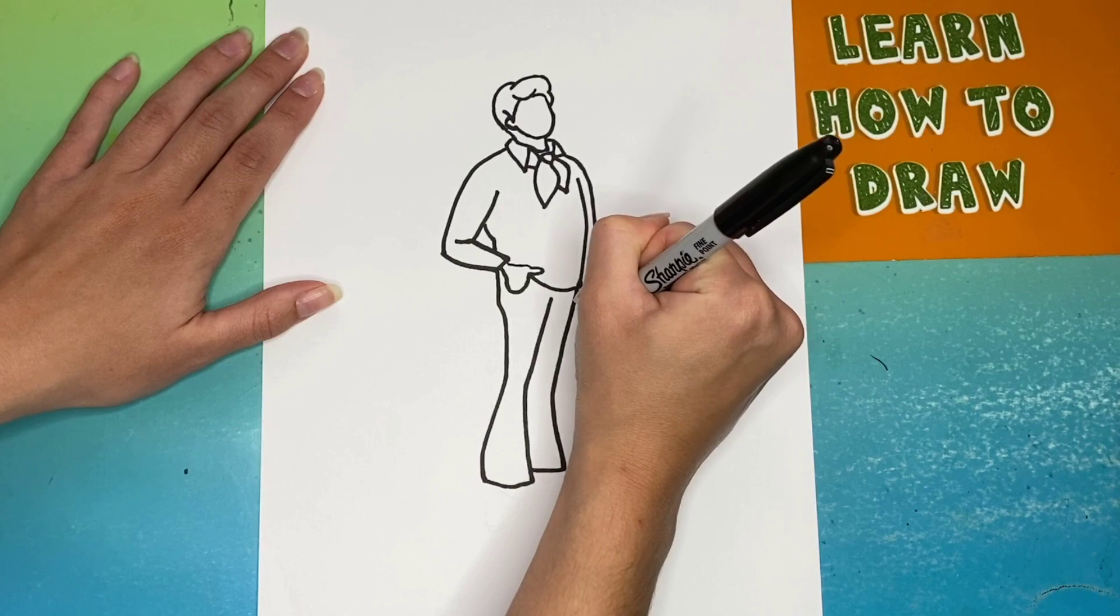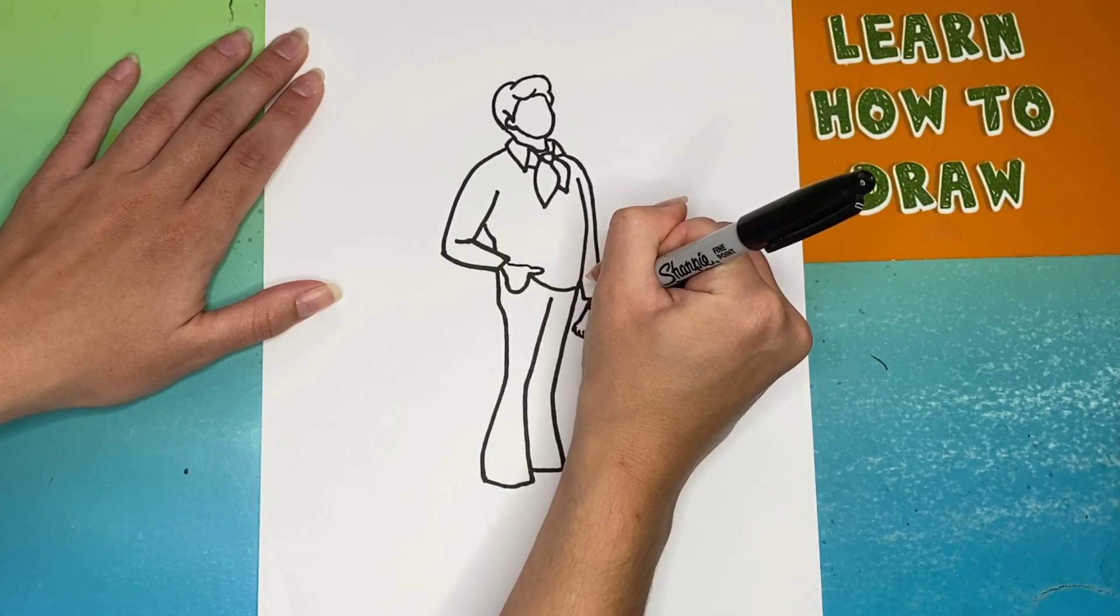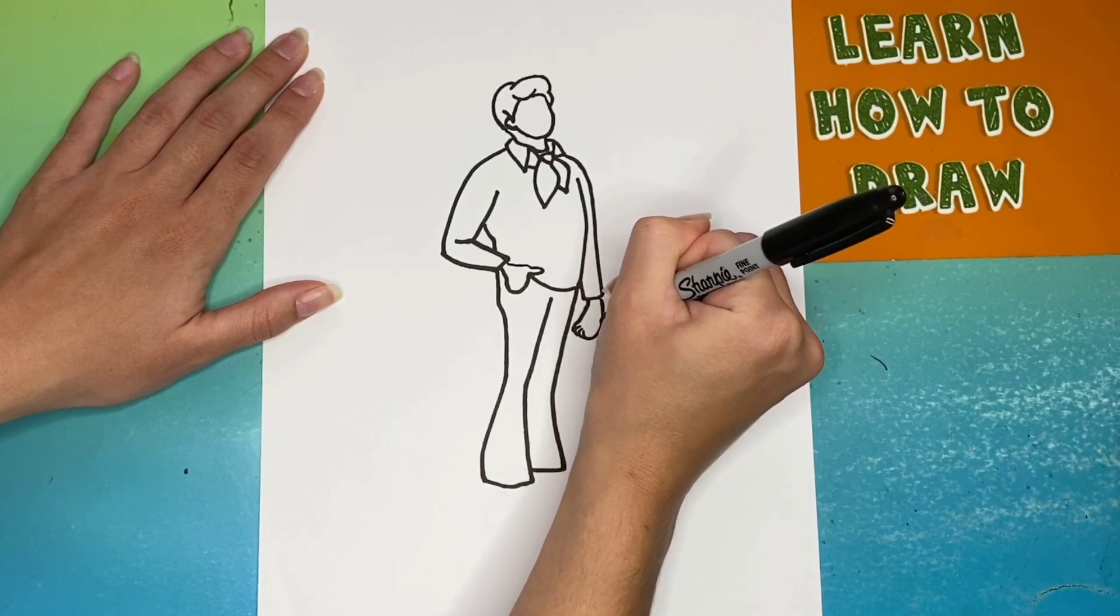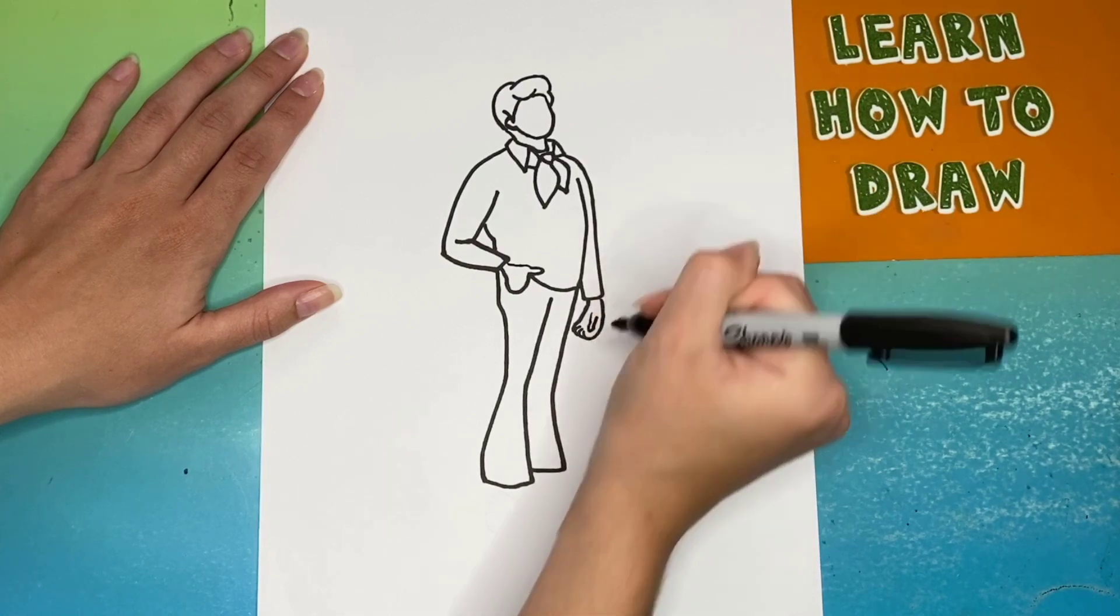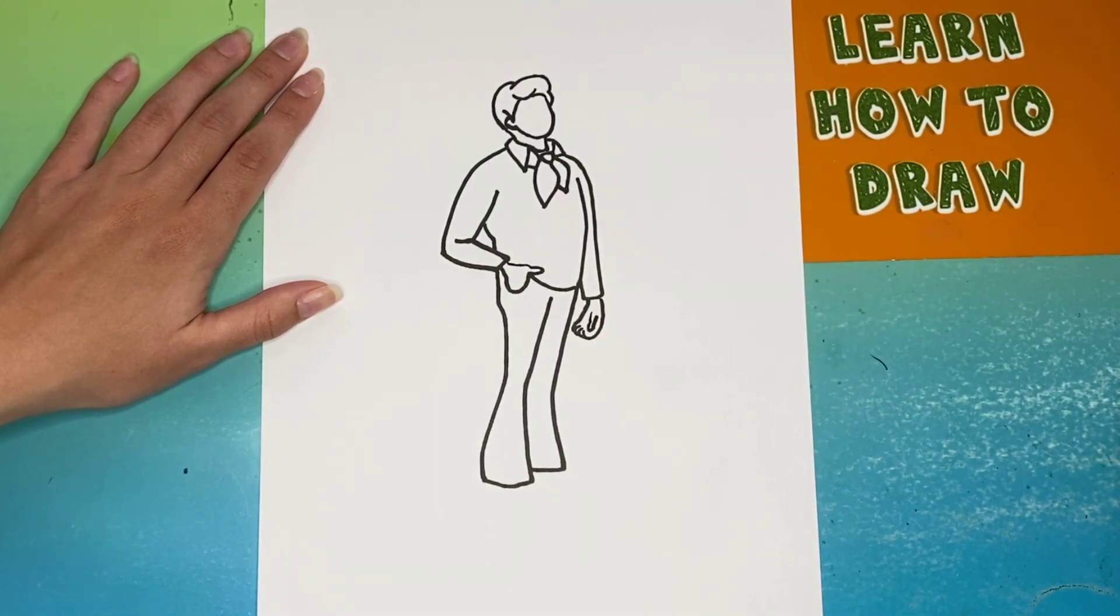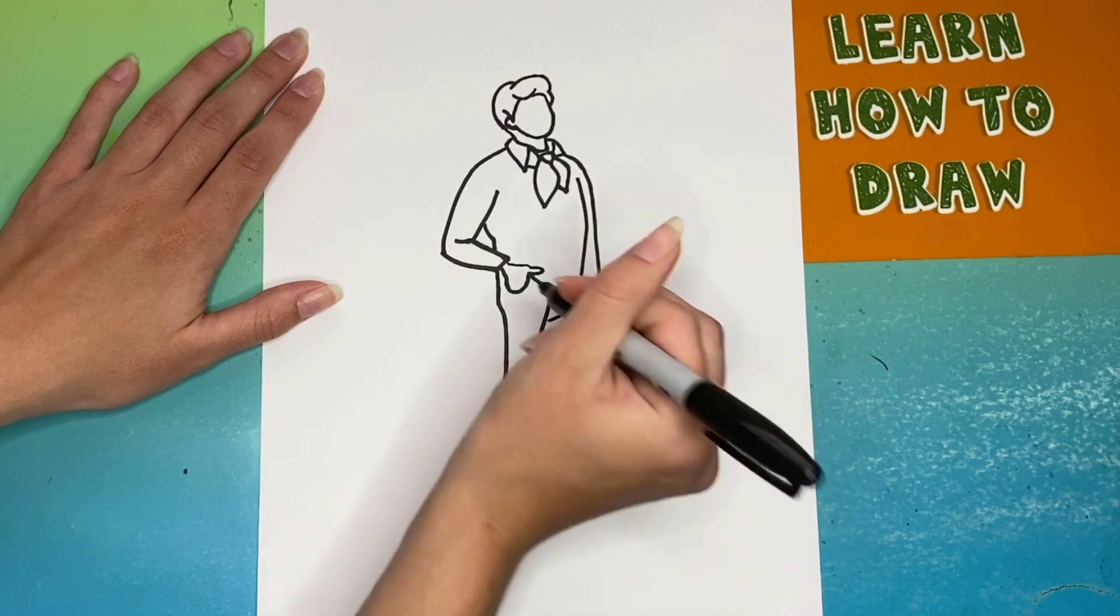After that, we're going to make his right hand. Then we're going to add a couple of detailed lines in the pants.